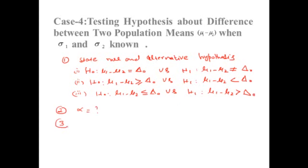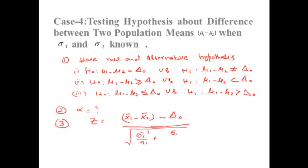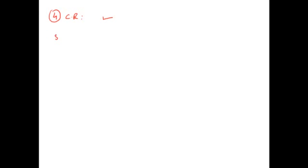In the second step we choose alpha. In the third step we define the test statistic used for the difference of means, which is: z equals (x-bar1 minus x-bar2 minus delta-naught) divided by the square root of (sigma1-squared over n1 plus sigma2-squared over n2). Under H-naught this is exactly standard normal. Fourth is the critical region, fifth is computation, and sixth is conclusion.